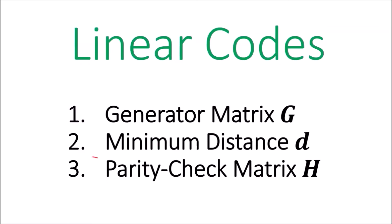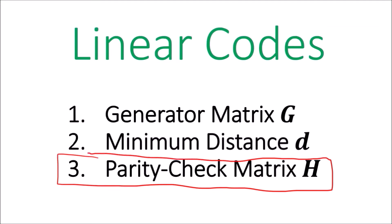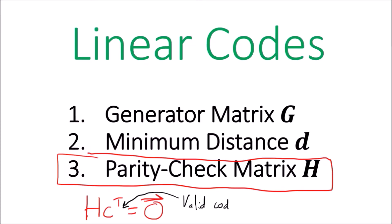The last thing I'd like to talk about is the parity check matrix, which is a tool that we use to correct errors. Every code has a parity check matrix H, which, for a valid codeword C, obeys the relation H multiplied by C transpose equals 0. If the codeword is invalid, the output of applying the parity check matrix H is non-zero, so H gives us a method of detecting errors when they've occurred.